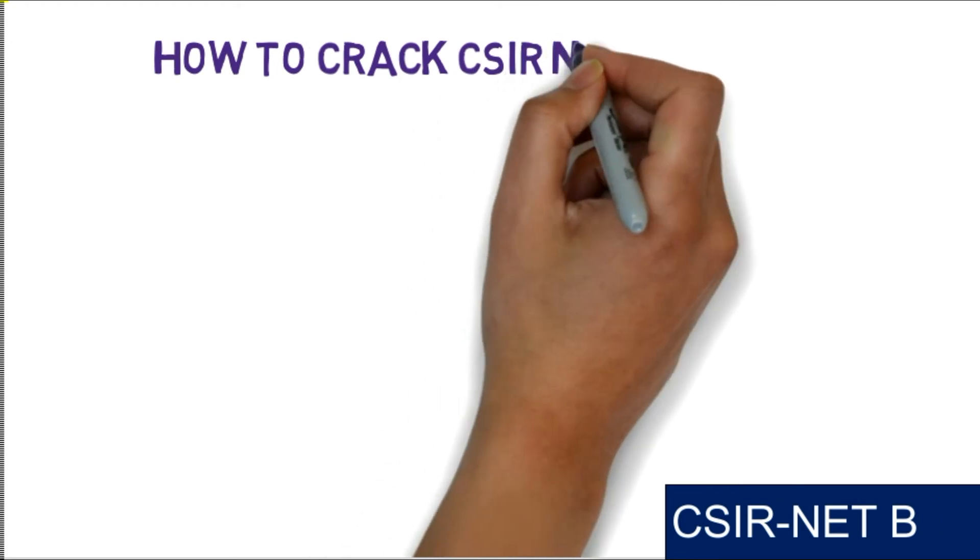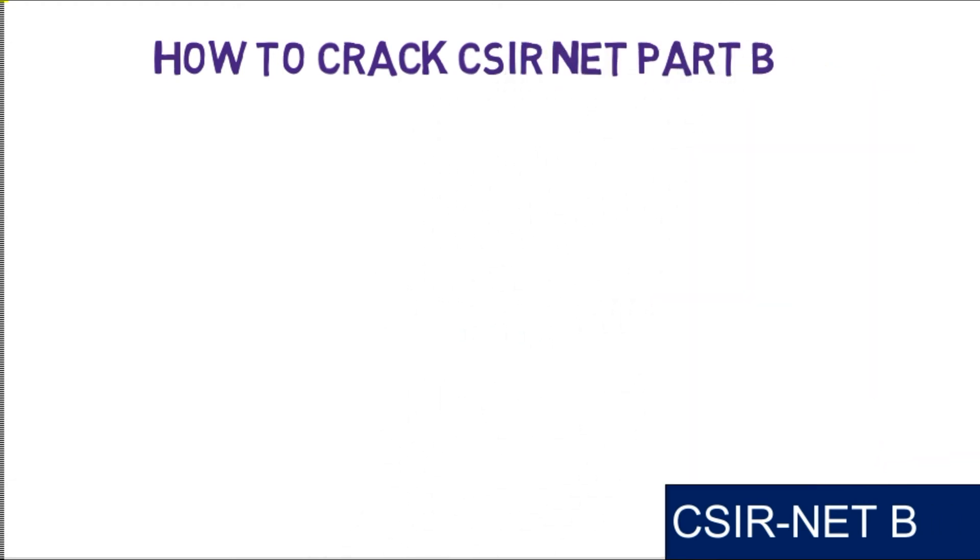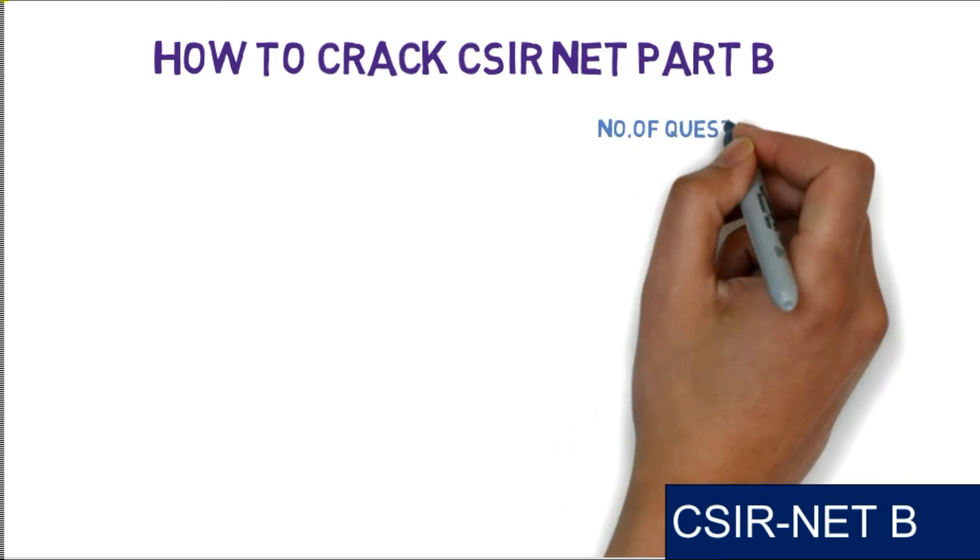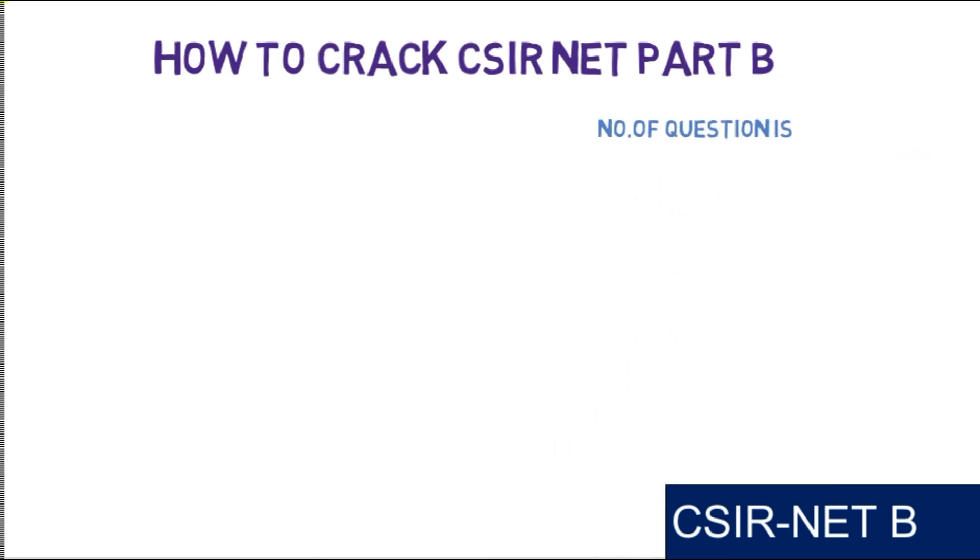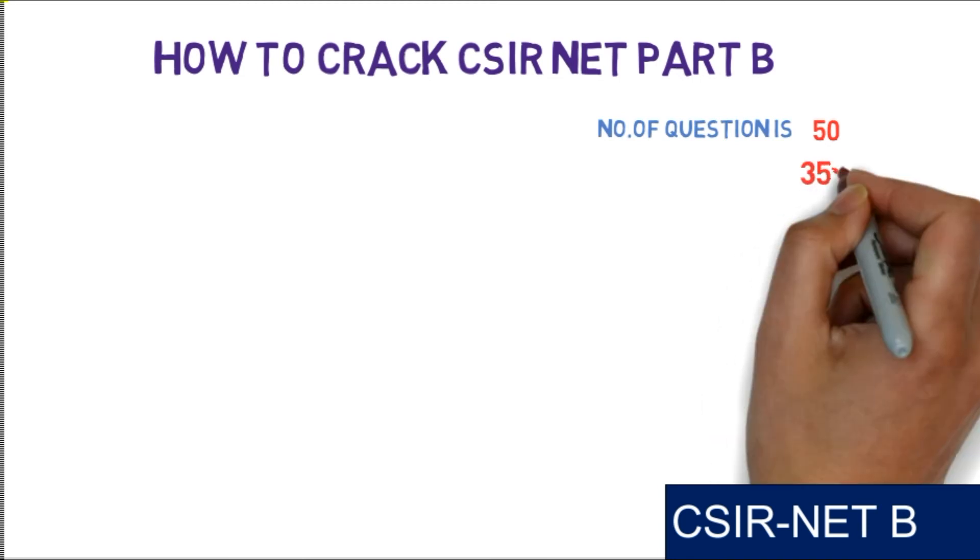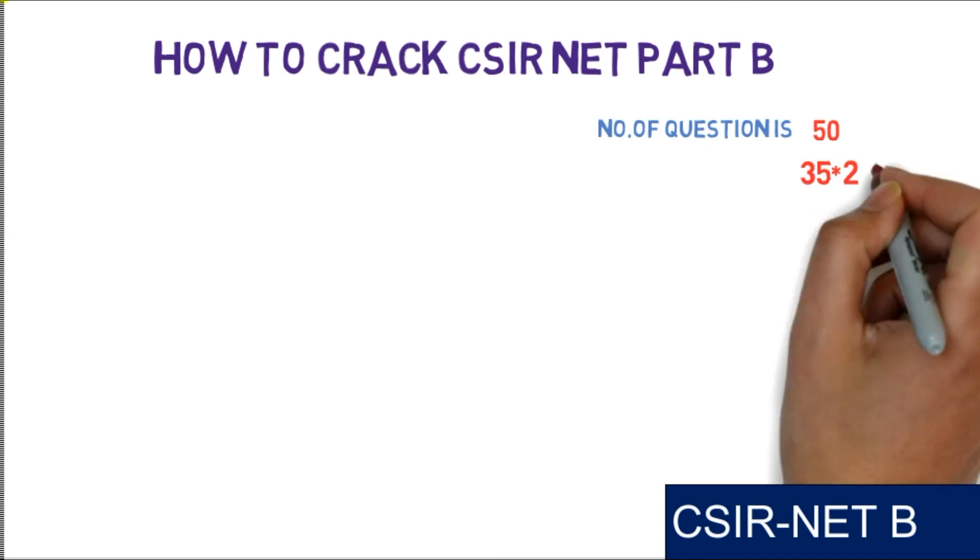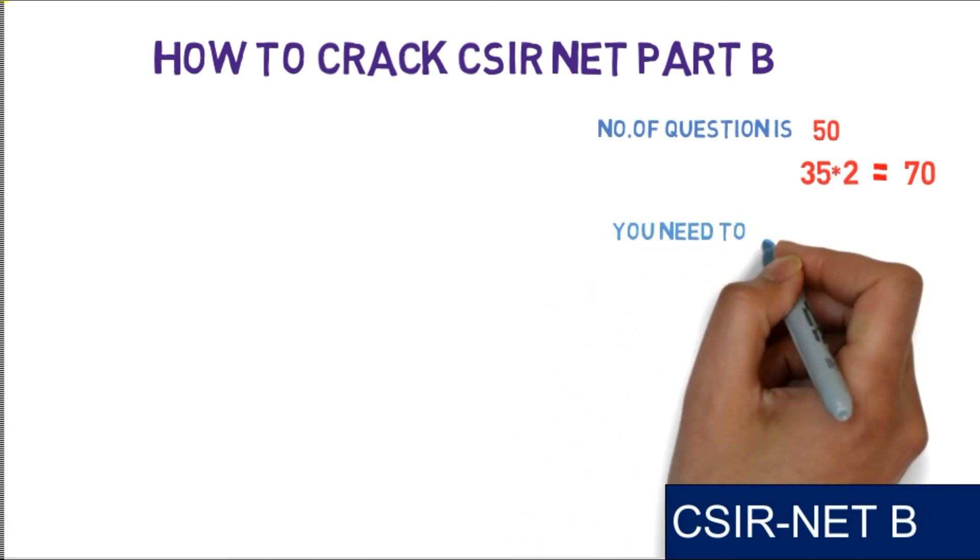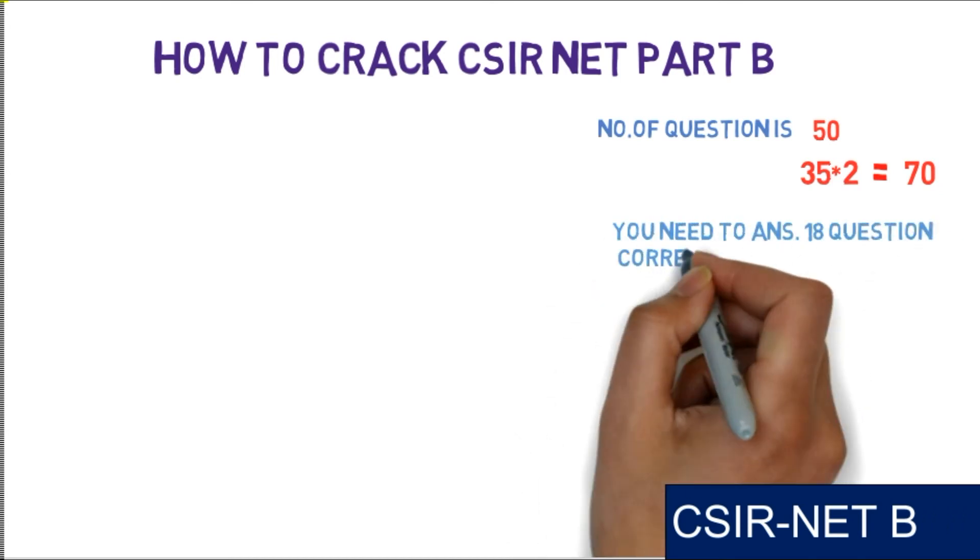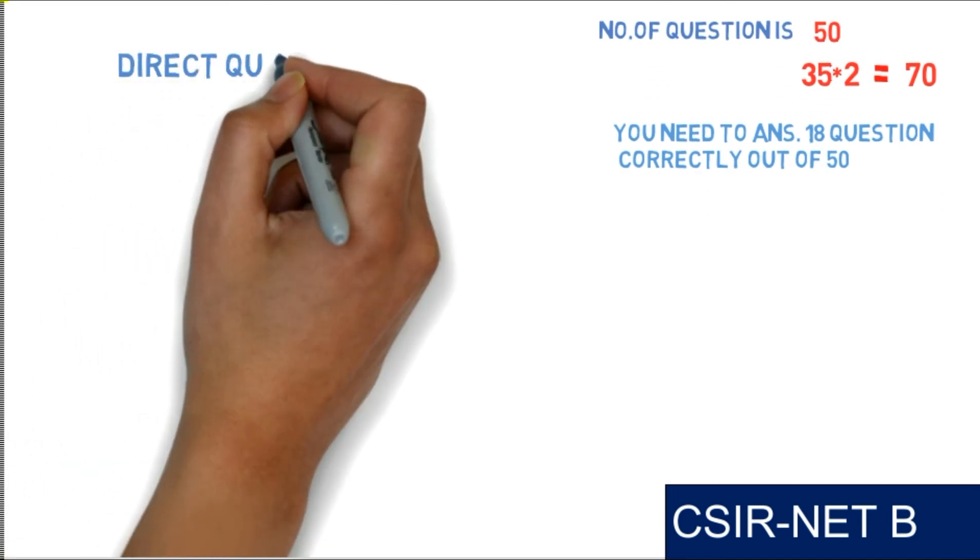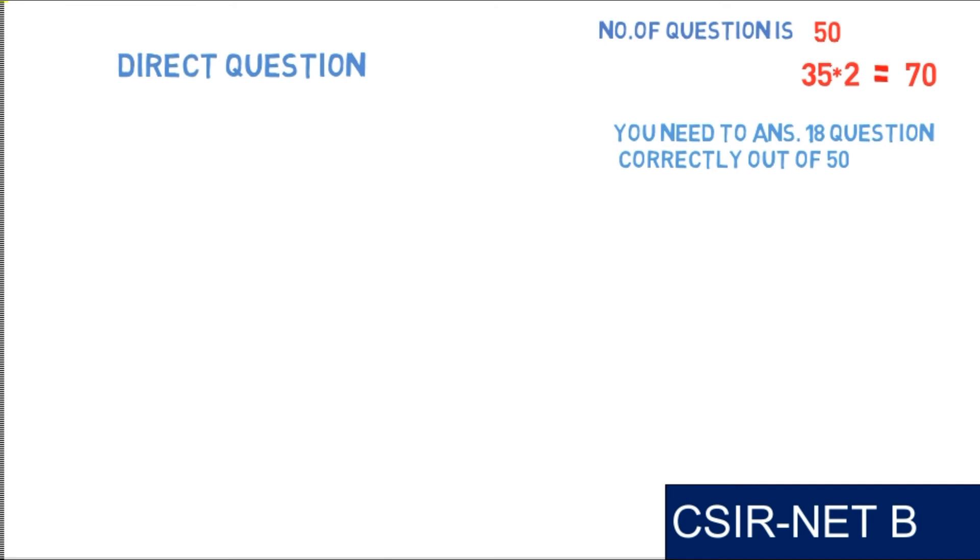In this video I will provide how to crack CSIR NET Part B and the topics that are majorly asked. The number of questions is 50, and from that you have to attempt 35 questions. Each question contains two marks, so total will be 70 marks. From those 35 questions, you have to answer 18 questions correctly.